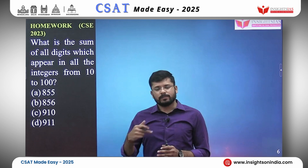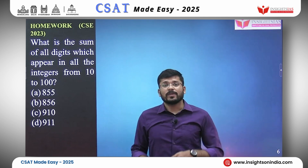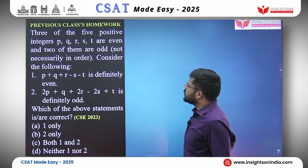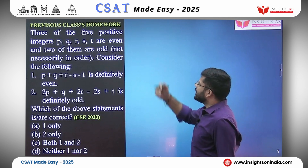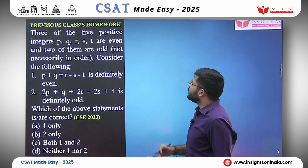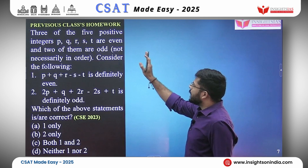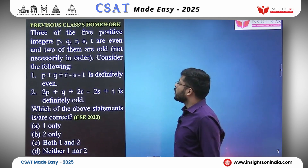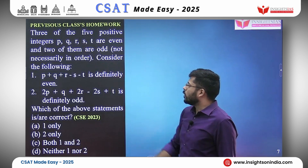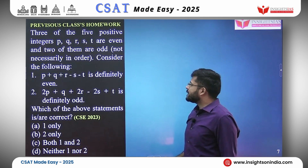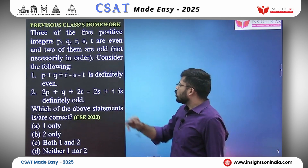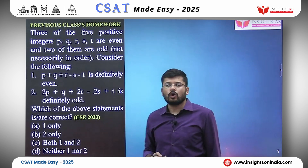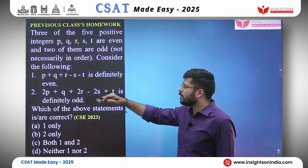We shall discuss the answer to this question in the next class. Now it is time to discuss the answer to the previous class's homework question. The question was: 3 of the 5 positive integers P, Q, R, S, and T are even and 2 of them are odd. Consider the following statements and evaluate each one.